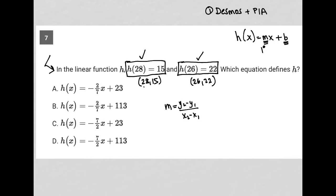So I'm going to call this x1 and y1. I'm going to call this x2 and y2. So now I'm just plugging those numbers in. So I'd have 22 minus 15 for y2 minus y1 divided by 26 minus 28, and that's for x2 minus x1. 22 minus 15 is 7. 26 minus 28 is negative 2.